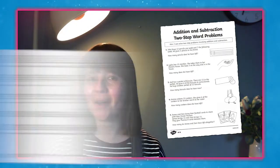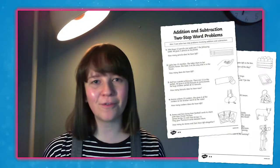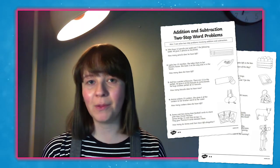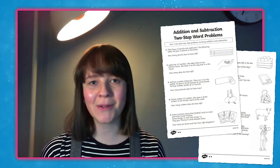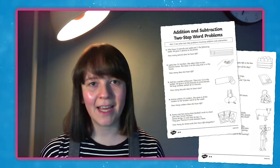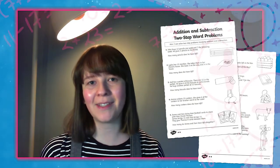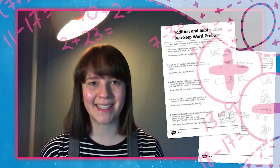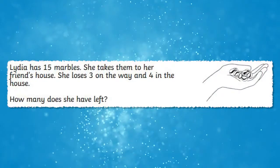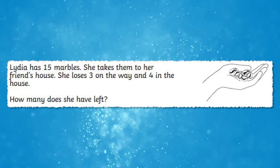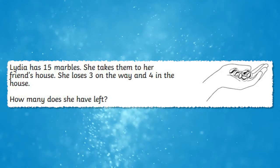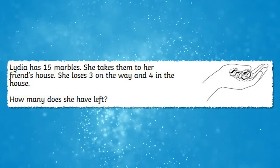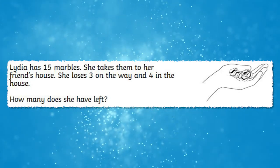This worksheet poses 10 different word problems for children. Each one will require two steps in order to solve it. Children will have to use their addition and subtraction skills to do this. Children could begin by reading the question really carefully and picking out the two number sentences that they'll need to solve.